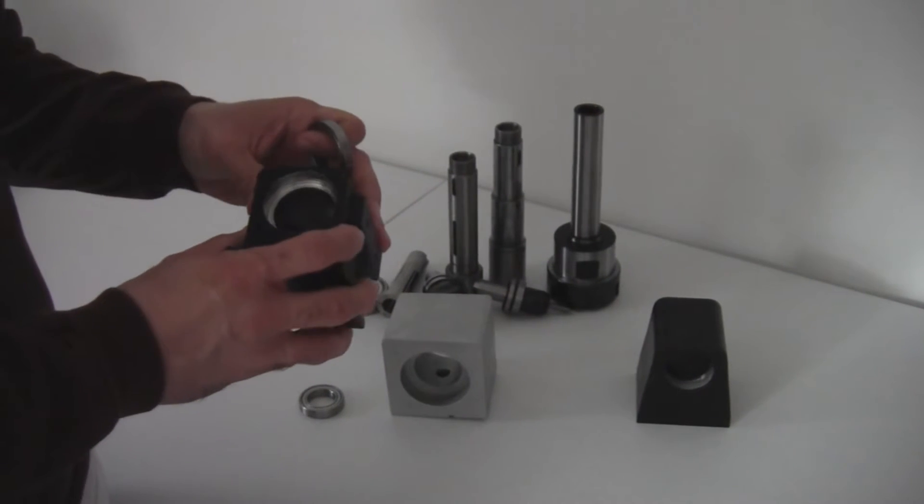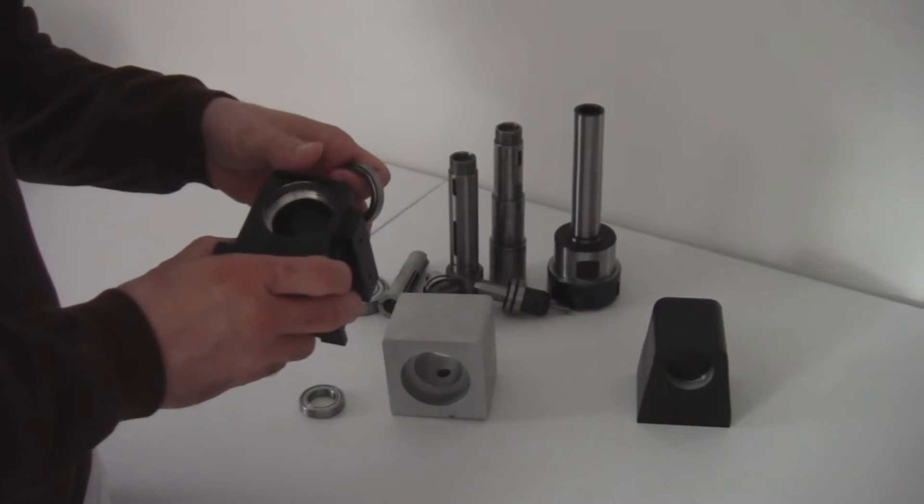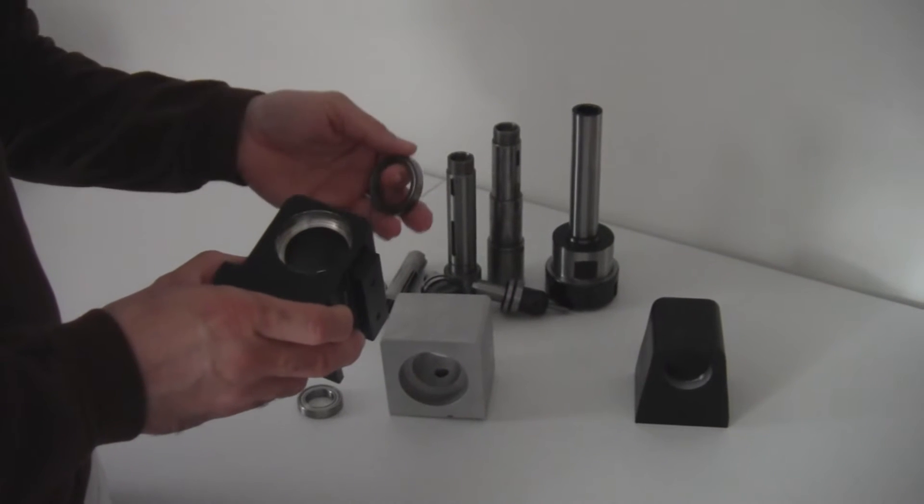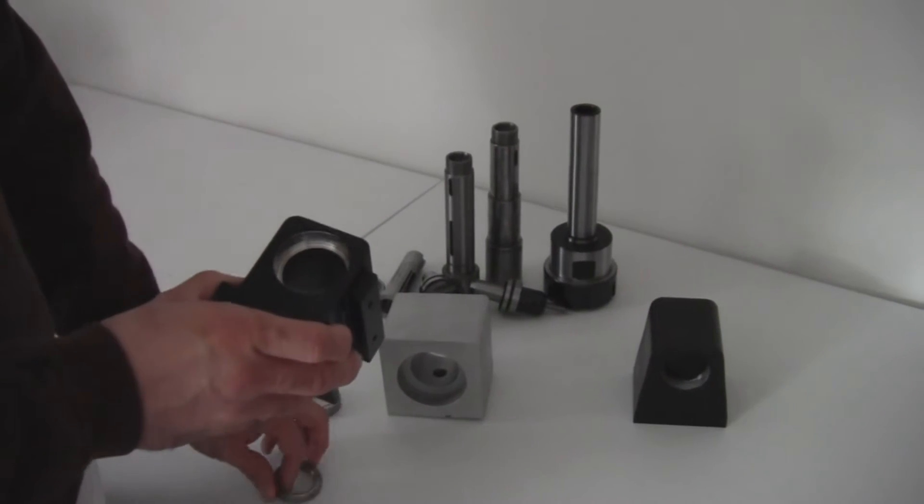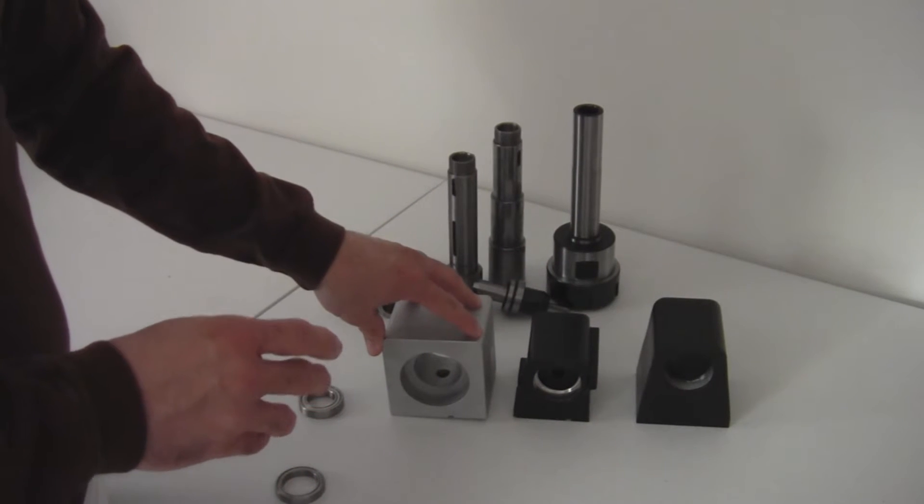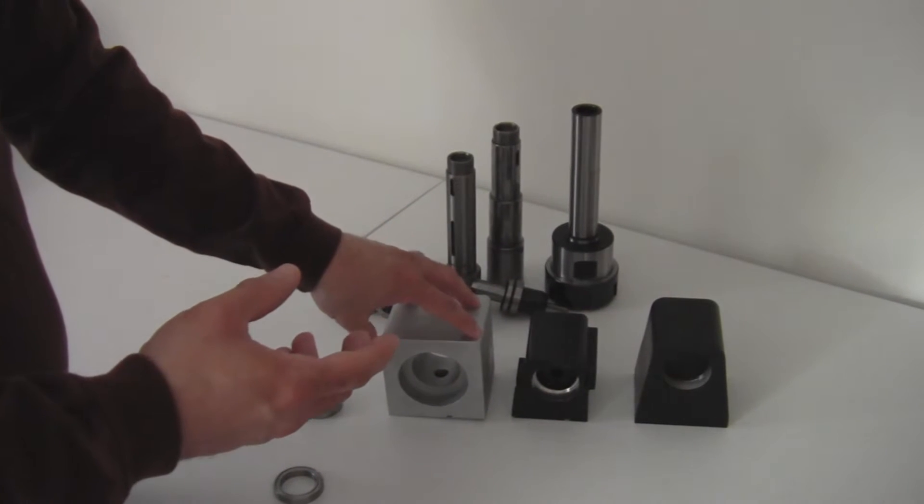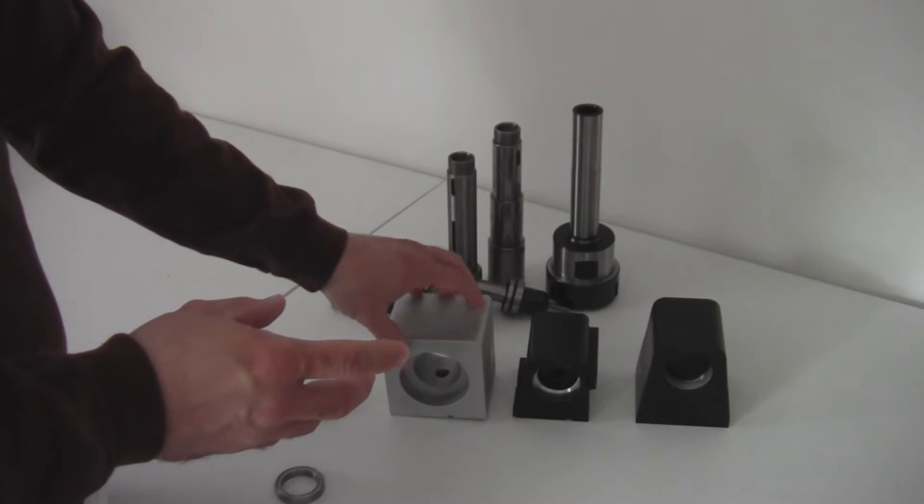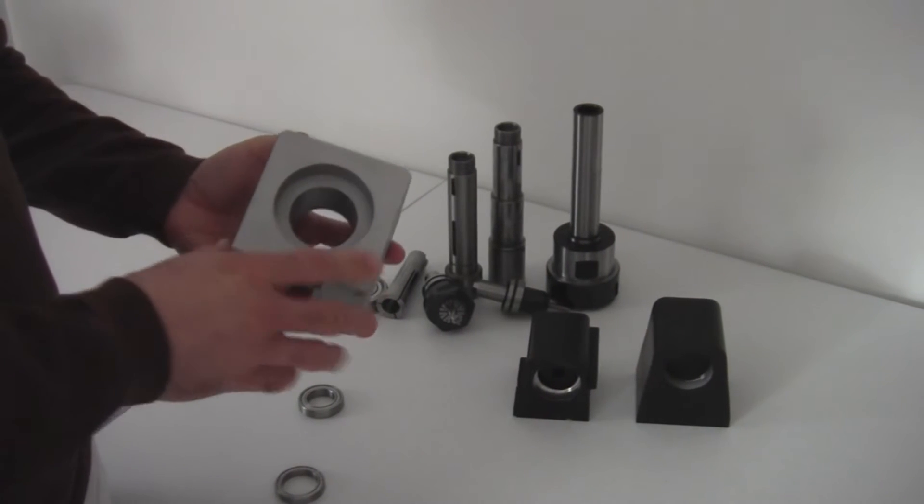What we decided to do is we wanted to have a much more robust bearing in there. We also wanted to not only have a more robust bearing, but also be able to possibly fit a 5C spindle through there at some point. This is what we came up with.